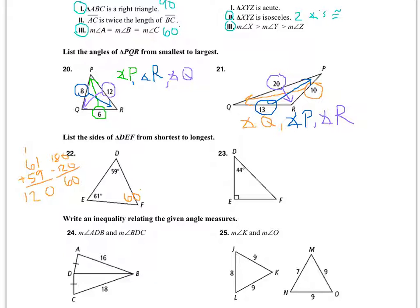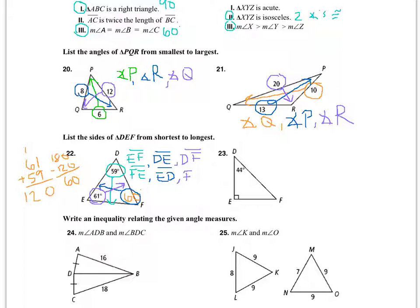Now that I have all three angles for question 22, I can list the sides. The smallest angle is at D measuring 59 degrees, so the shortest side is EF. The next smallest angle is 60 degrees, and the side across from it is DE. The largest angle is at E, so the largest side is DF.